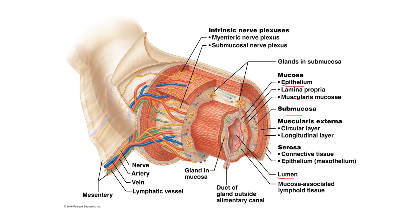The submucosa is where you're going to have a lot of vascularization — your arteries and veins going through here — with a little bit of nerves. Then you have your muscularis externa, with circular fibers going around it and longitudinal muscles, which help move substances along. And then you have your serosa on the outside edge, connecting things and holding stuff in place, with blood flow able to pass through.